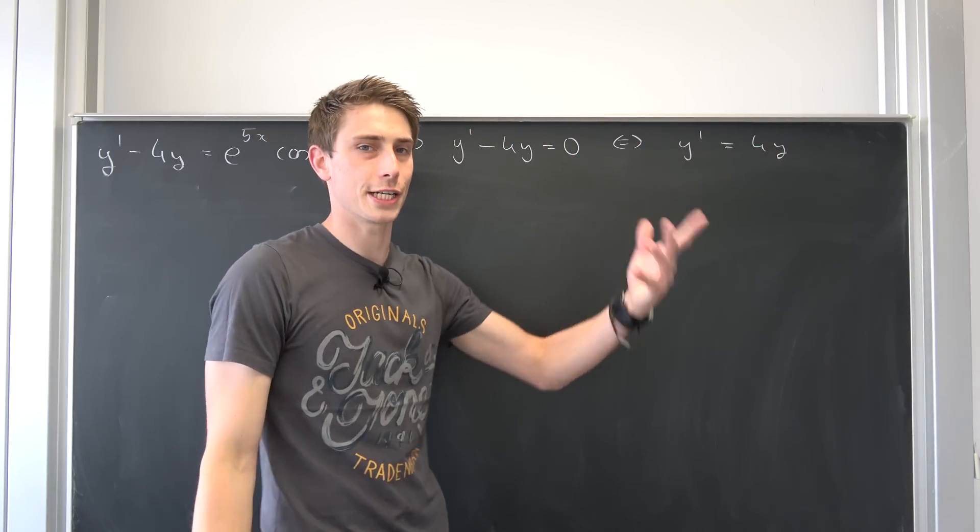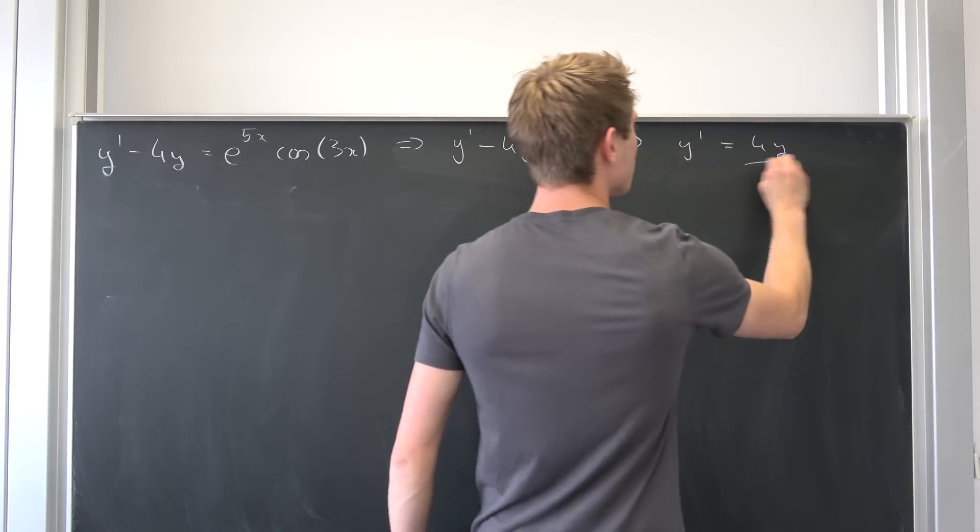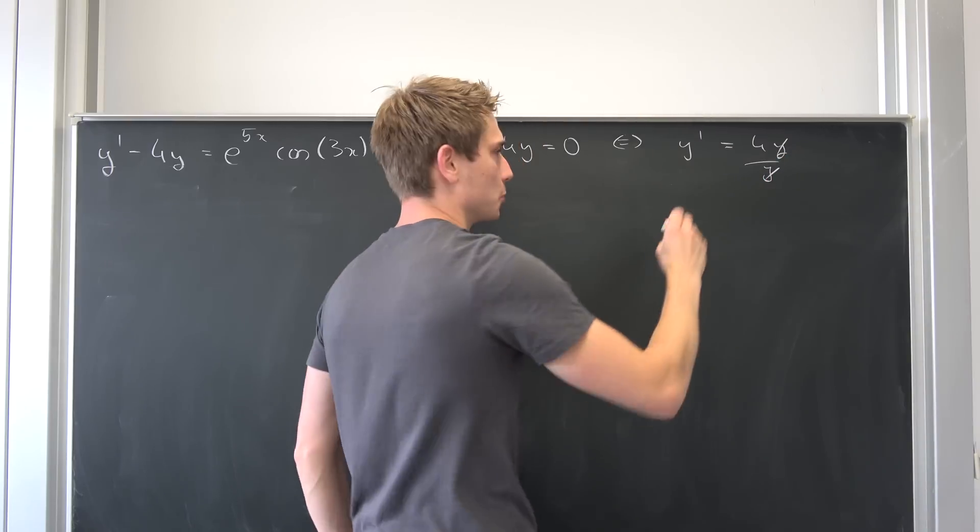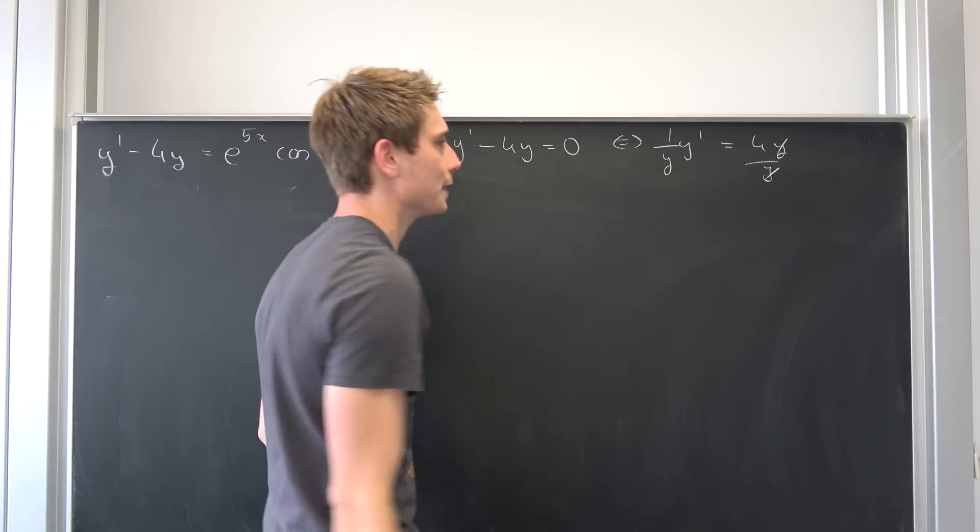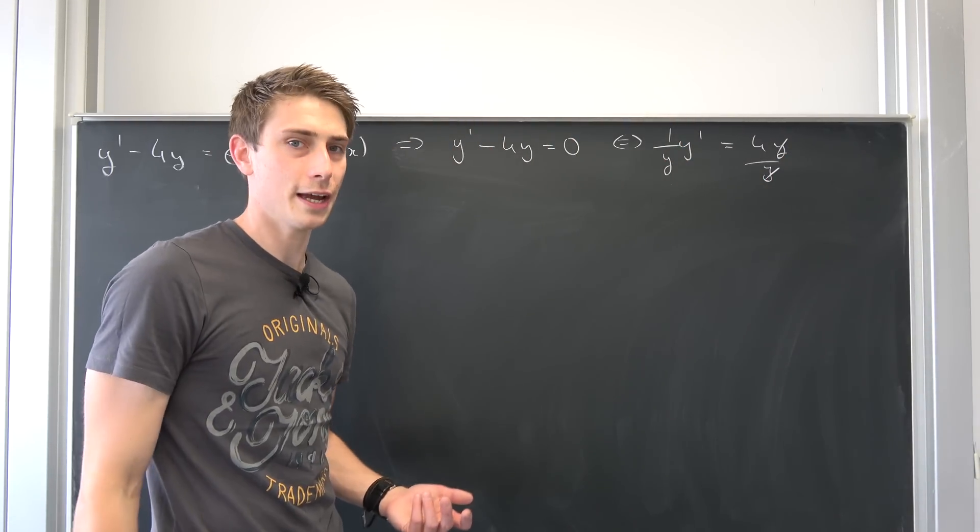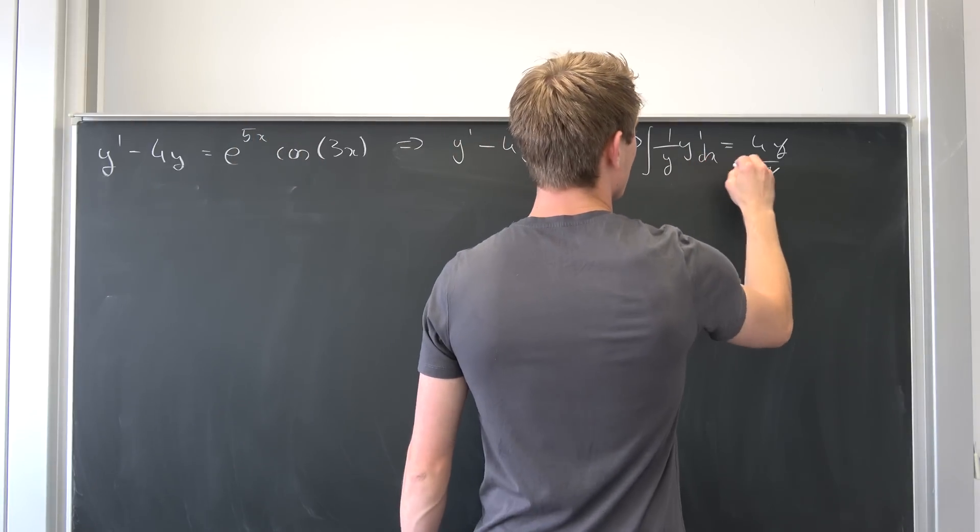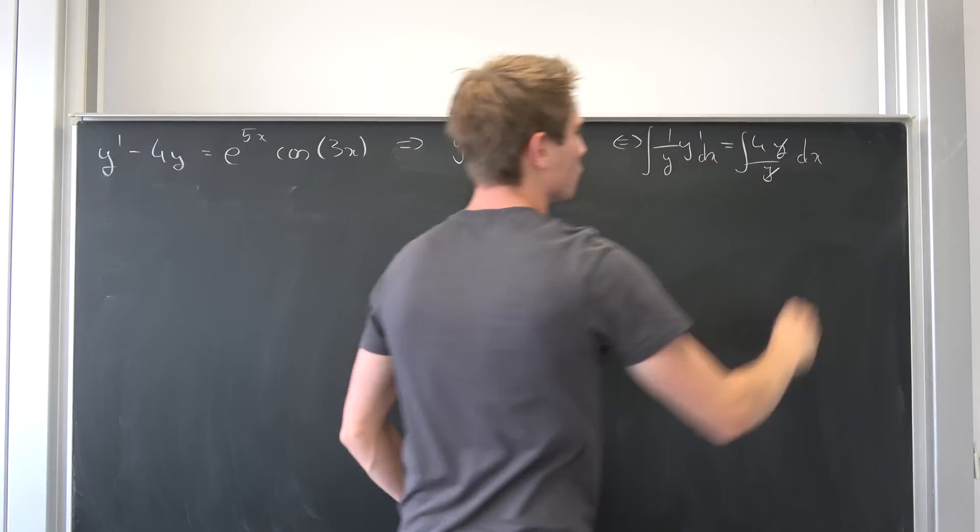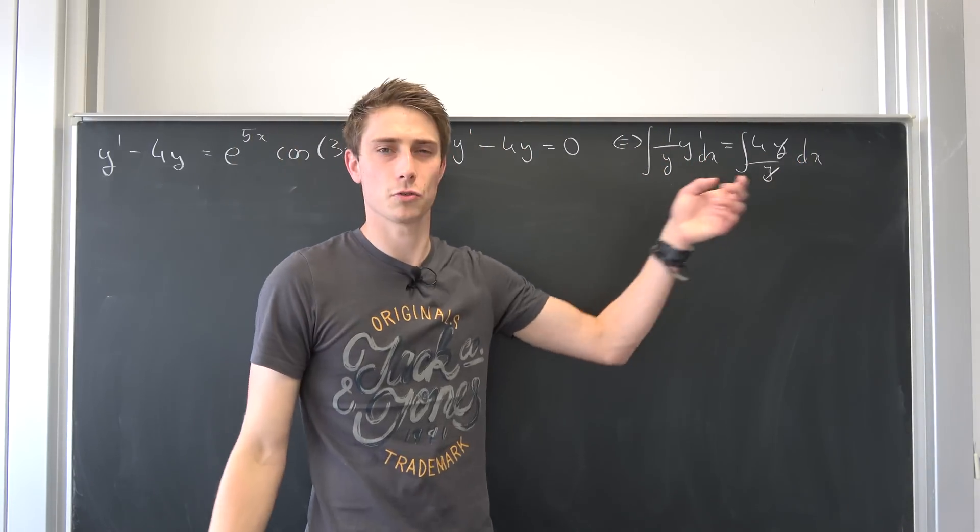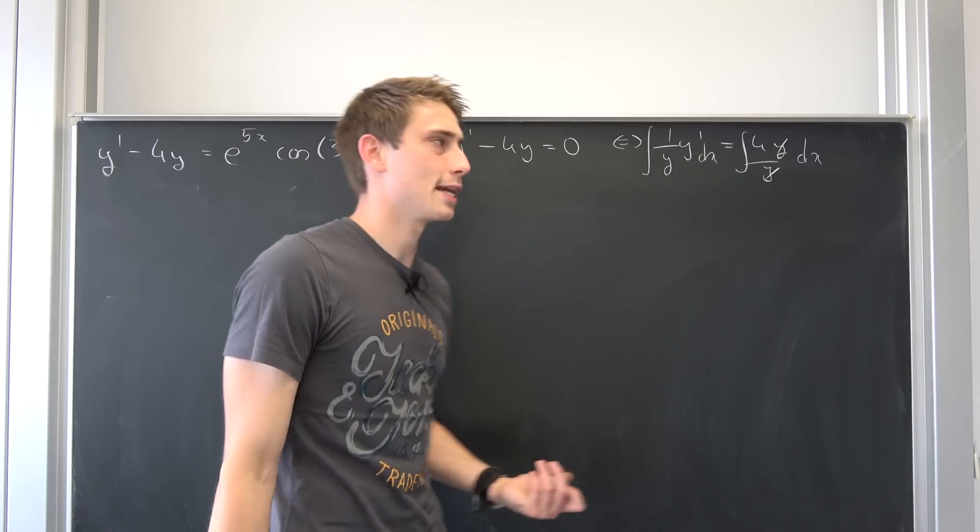So we end up with y prime equals to 4y. And now we can divide both sides by y. We don't want it to be zero. As you see I'm going to pull off a little black pen red pen here. And now we can integrate both sides with respect to x. And then we are already done basically. So integrating both sides with respect to x is going to give us well. On this side it's just going to evaluate to 4x plus an arbitrary constant c.